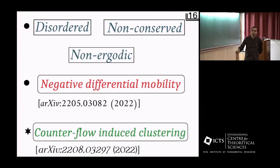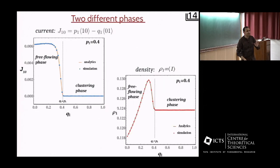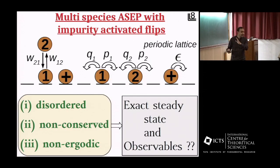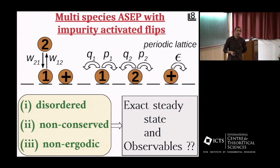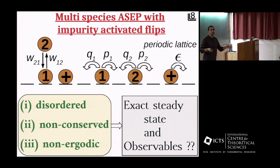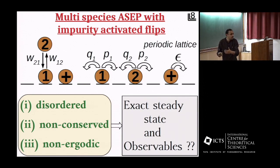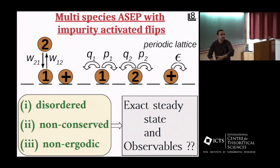During Q&A, one question was raised about whether the numerics are done with the two-lane model. The response clarified that the results shown are for the one-dimensional mapped model. Regarding the dynamics of the impurity: originally the bridge should be quenched with no motion, but in the one-dimensional model a small hop rate for the impurity must be allowed. This can be motivated by saying some bridges are blocked for road construction while others are open, so there is effectively some diffusion of the bridges with a small rate epsilon.